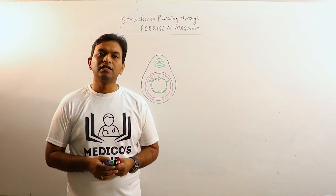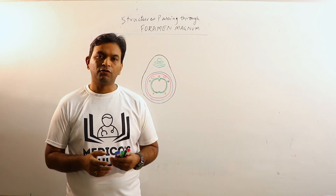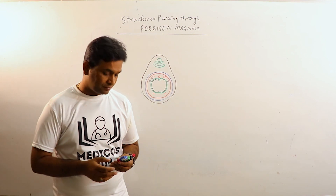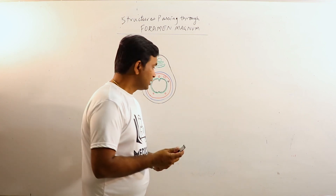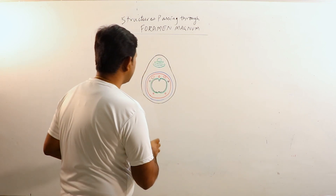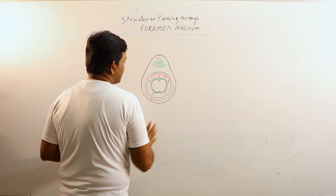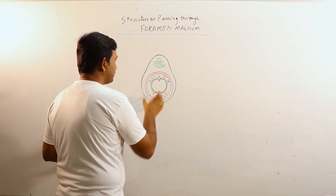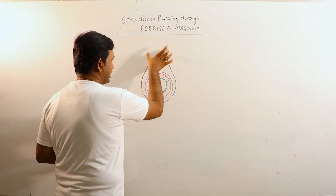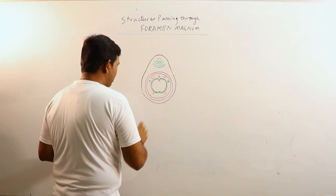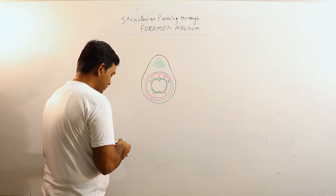Foramen Magnum is the largest foramen of the skull. It is somewhat oval in shape with a narrow anterior end and a broad posterior end.